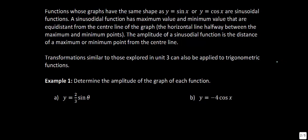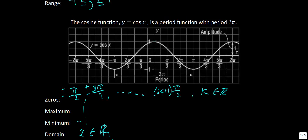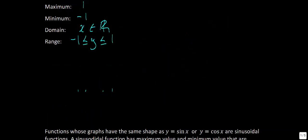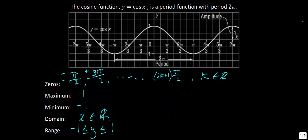Functions whose graphs have the same shape as y = sin x or y = cos x are called sinusoidal functions. A sinusoidal function has a maximum and minimum value that are equally distant from the center line. The amplitude of a sinusoidal function is the distance from a max or min point to the center line — for the standard sine graph, that distance is 1, so the amplitude is 1.